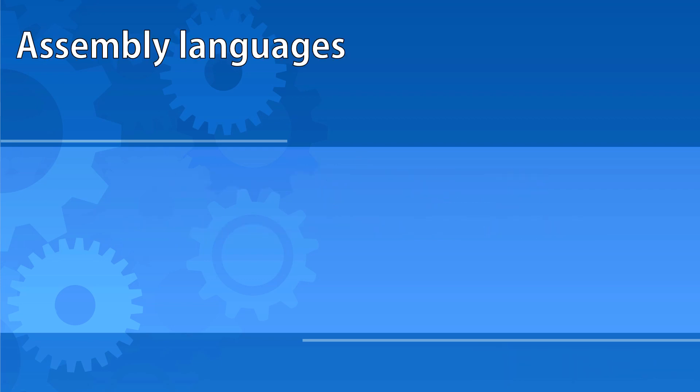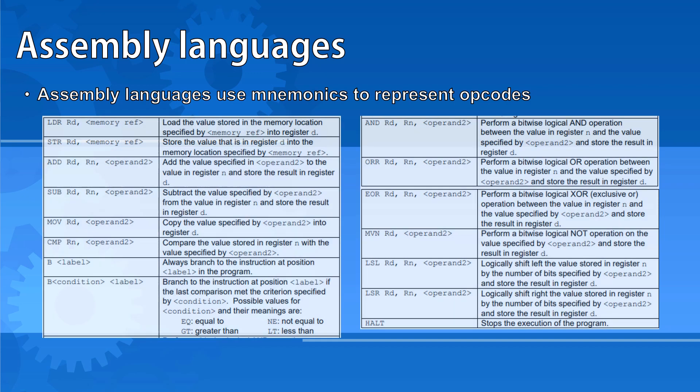Assembly languages use mnemonics, which are short abbreviated codes that represent opcodes. This makes them easier to remember for a human being. These example codes here are the ones provided by AQA in their exams. You don't have to learn them off by heart, but it helps if you already know what they mean from the mnemonic.